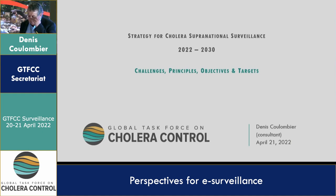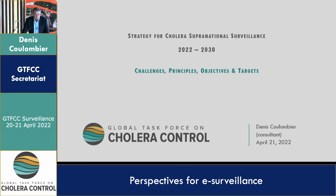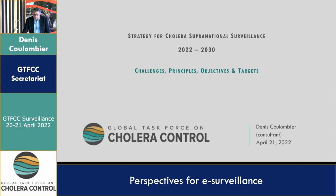We started the project by really defining what we want to do, and we haven't looked yet at how we're going to do it. I think it's important to sort the issues and be very clear on why we want to have supranational surveillance and which objectives we want to achieve. Then we can deduce which data will be needed, which indicators will be looked at, and through which channels we can collect that information. So today we are not looking at the how, but more at the what.